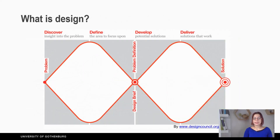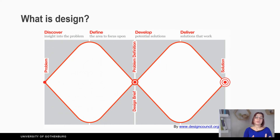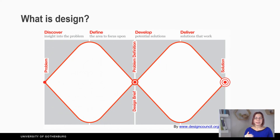The Design Council in the UK describes the design process as a double diamond, which consists of four phases. The first diamond consists of the phase 'Discover,' where you try to understand the environment, the user, their needs, their wishes, and what the problematic areas are. The next phase of the first diamond is 'Define,' where you identify problematic issues that appeared while observing the users and understanding their environment.